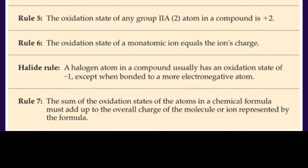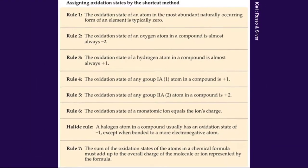They sneak in the halide rule between rule 6 and 7, but again this should be familiar — halogens generally have a negative 1 charge. There is an exception: if halogens bond to each other, the more electronegative atom takes the negative 1 charge. So fluorine, with the highest electronegativity, will always be negative 1, and if any other halogens are bonded to fluorine, they would have to adjust.